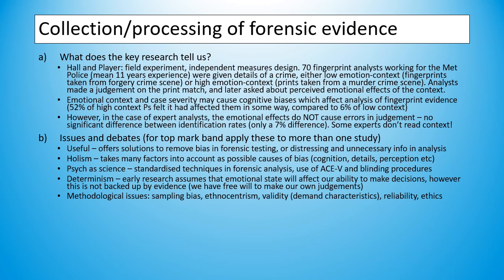Determinism is a problem. Early research assumes that emotional state does affect our ability. However, the Hall and Player study doesn't necessarily back that up, saying we've got more free will than we think we do in cases like this. And there are methodological issues in the research, such as sampling bias, ethnocentrism, reliability, ethics, and validity. Participants in Hall and Player knew they were taking part in an experiment, which might cause demand characteristics.